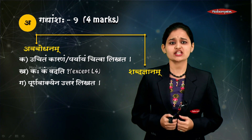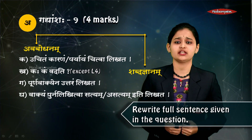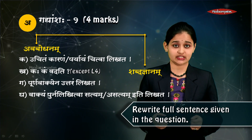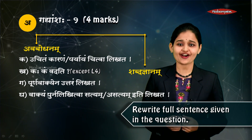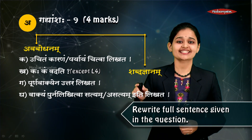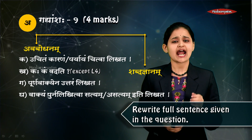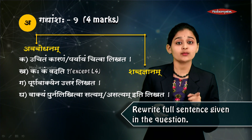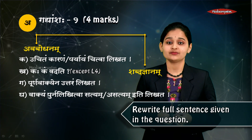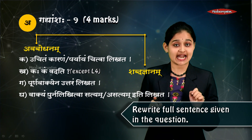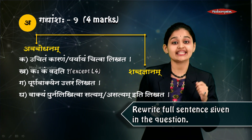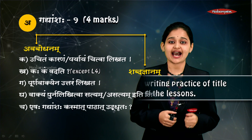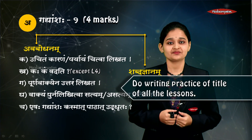The third krithi is poorna vakkena uttaram likhata — answer the following question in a complete sentence. The fourth krithi is vakhyam punar likhitva satyam va asatyam iti likhata — true or false. A sentence will be given; understand its meaning and write whether it is satyam or asatyam. Do not put anuswara; write halam tamo at the end, and dhanda is compulsory.